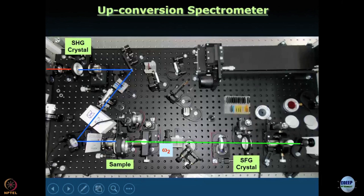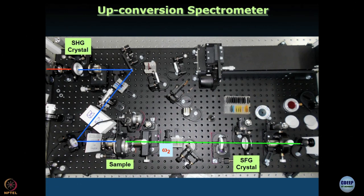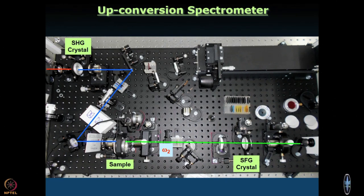So: fluorescence passes through the long pass filter, then a lens focuses it onto another nonlinear crystal. This second crystal is called the SFG crystal — sum frequency generation crystal, not second harmonic generation. The fluorescence light and a second beam are focused onto this crystal. In this kind of instrument you always need a set of filters — mostly long pass, but some short pass filters are included as well, chosen according to the sample.